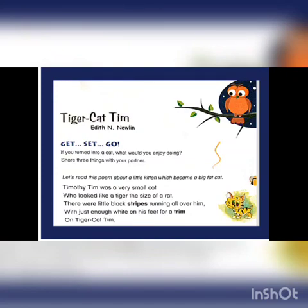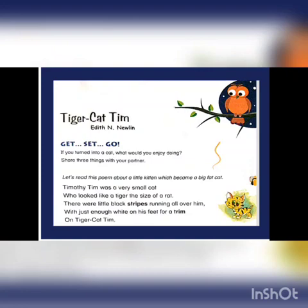In these lines, the poet is saying that Timothy Tim was a very small cat. He looked like a tiger the size of a rat. This Timothy Tim had many little black stripes on his body and enough white color on his paw. You can also see in this picture the color of the cat is like a tiger and it has many black stripes. That's why the poet is comparing this cat to a tiger.